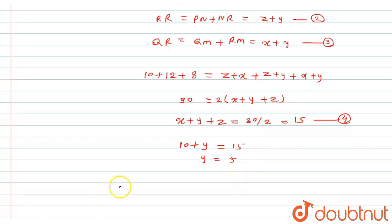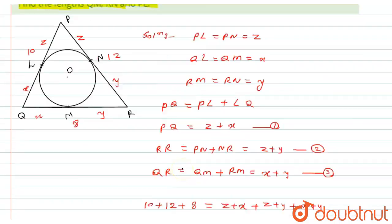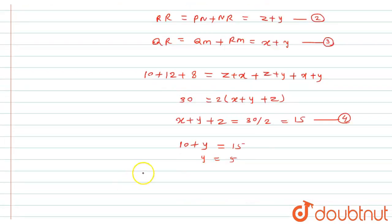Similarly, if I will look at equation number 2 and 4, I can put the value of Z plus Y which is PR and PR is given to us 12. So 12 plus X equals 15. Here I will get the value of X as 15 minus 12 which will be equals to 3 cm.